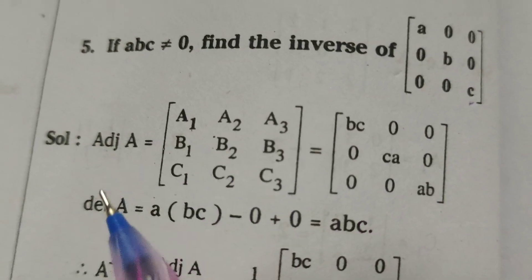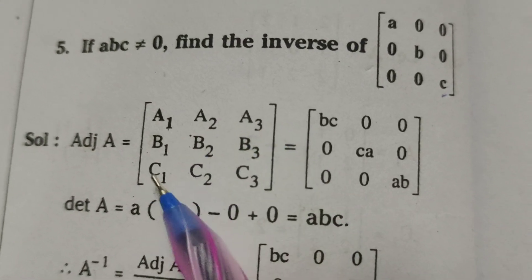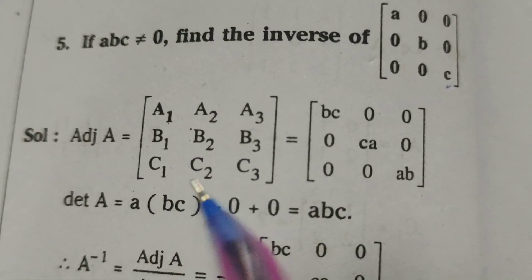Okay, first of all, here consider the matrix adjoint A. That is A₁, A₂, A₃, B₁, B₂, B₃, C₁, C₂, C₃.